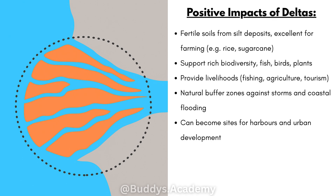So what are the positive impacts of deltas? Fertile soils from silt deposits are excellent for farming things like rice and sugarcane. They support rich biodiversity — fish, birds and plants. Deltas provide livelihoods through fishing, agriculture and tourism. They create natural buffer zones against storms and coastal flooding, and they can become sites for harbors and urban development.